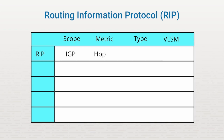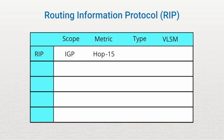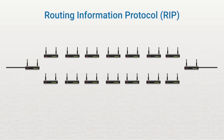RIP uses hop count as a routing metric, but it's limited to 15 hops between any two networks. If you ever see a hop count of 16 with RIP, that means the network is unreachable. In other words, the size of your network is a built-in limitation for this protocol. You can have a maximum of 15 hops between any two subnets on your network.